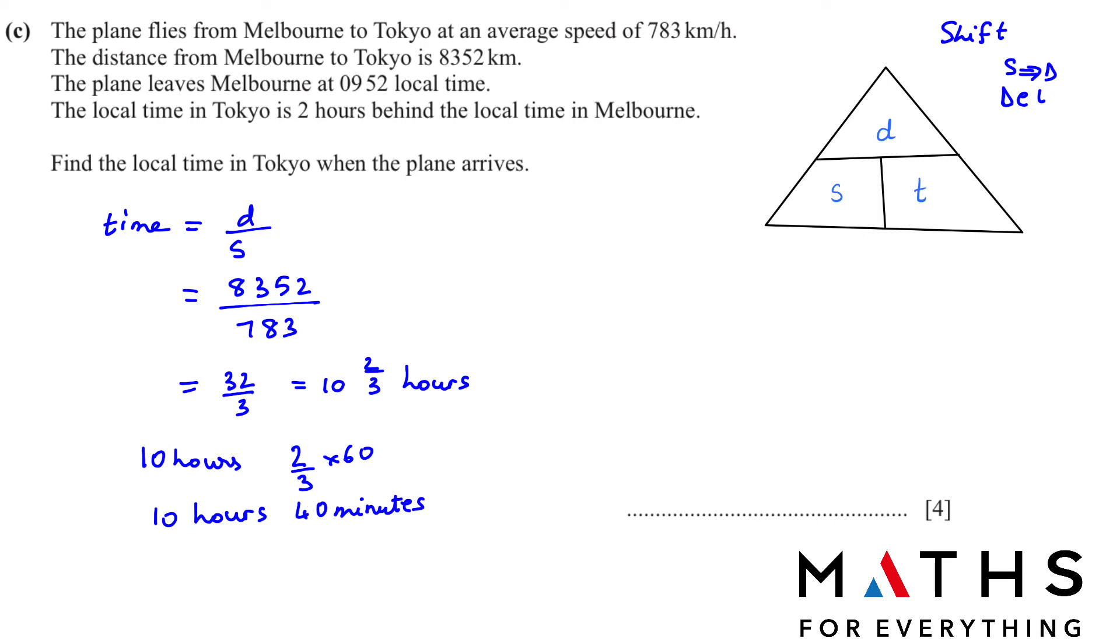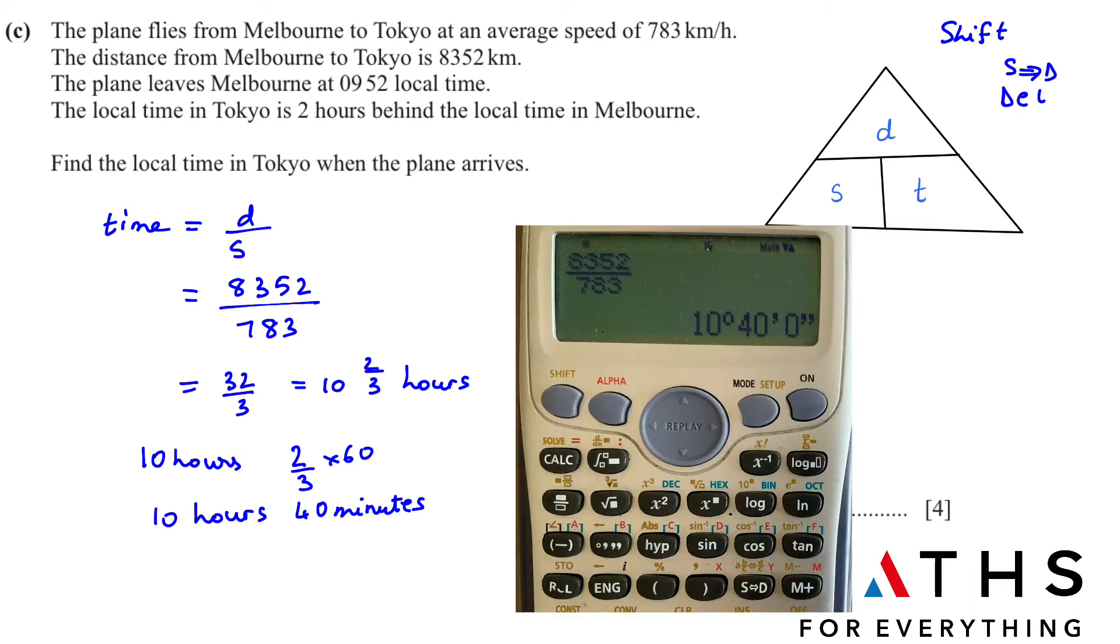This can be done directly in the calculator. I will show it to you now. So when you put in the calculator, this is the answer: 8352 divided by 783. After that, just press this button. All calculators have it. It will give you your answer in hours and minutes. So it's 10 hours and 40 minutes. And the other SD button that I was telling you about, shift and press this button, whenever you want to change it into a mixed fraction or a decimal.